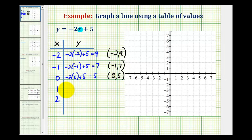And when x is positive one, we'd have negative two times one plus five. Well this would be negative two plus five. That's positive three. So the point one, three should be on the line.